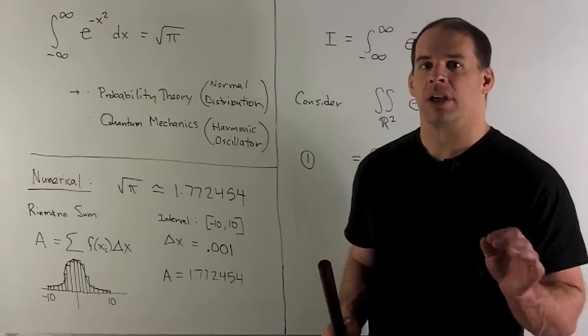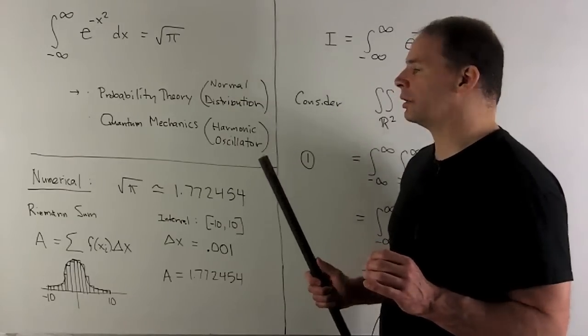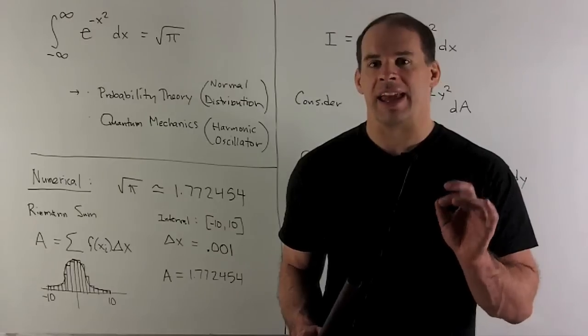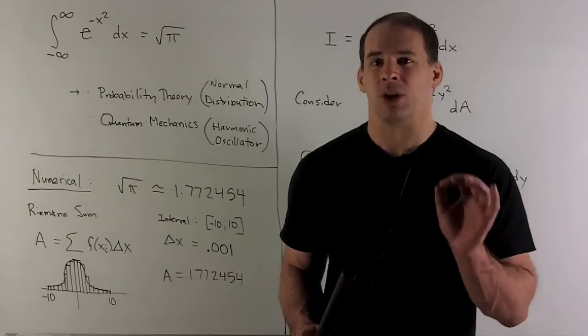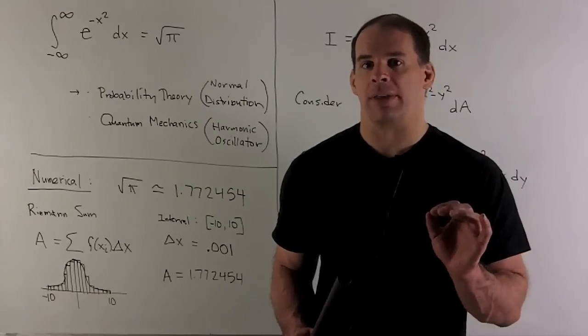In quantum mechanics it shows up when we consider the harmonic oscillator. For e^(-x²), I don't know how to get an antiderivative in closed form, so to get an idea of why this is true, let's look at numerical methods.